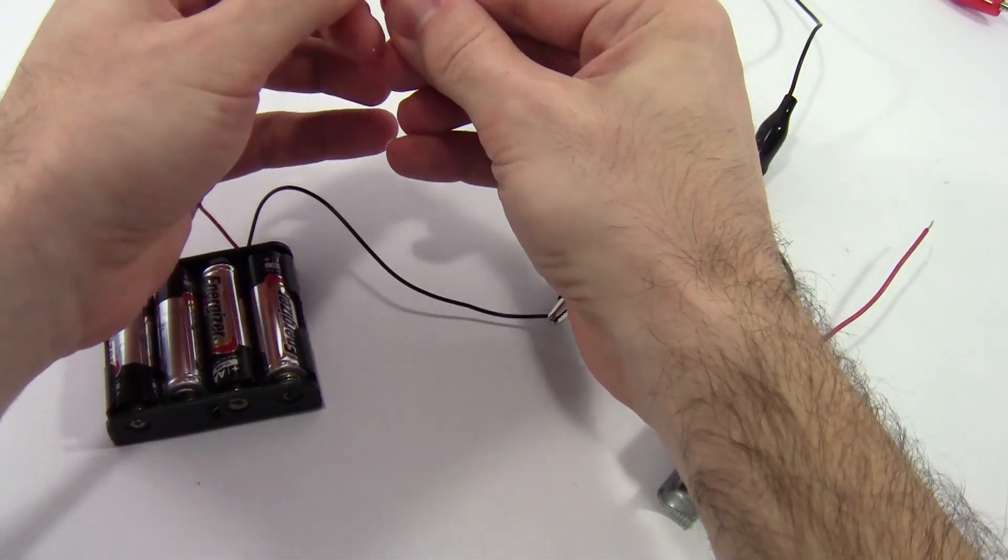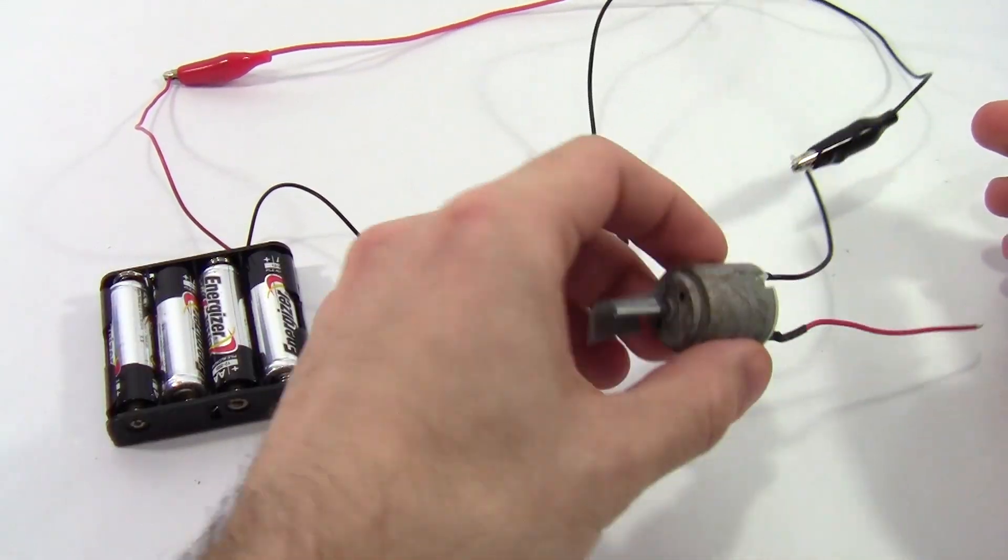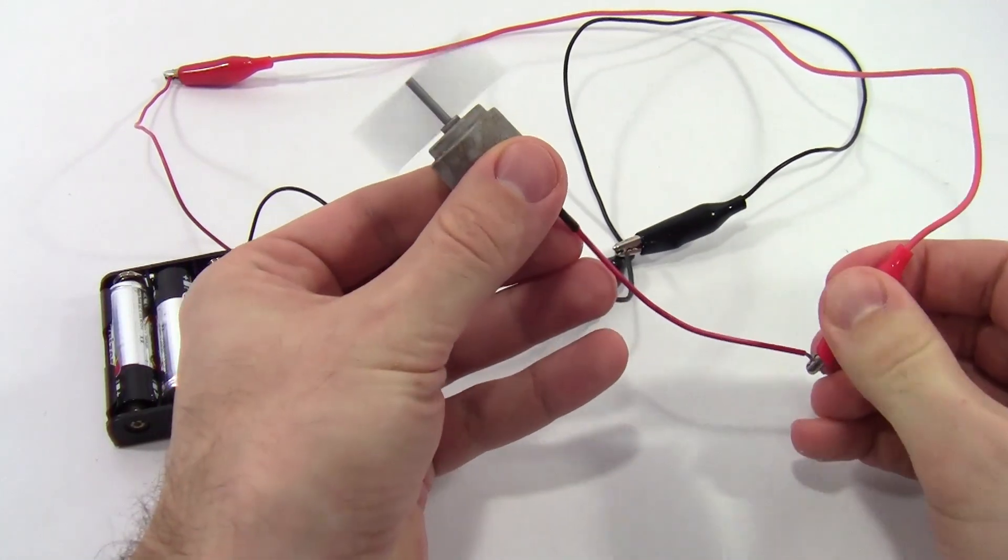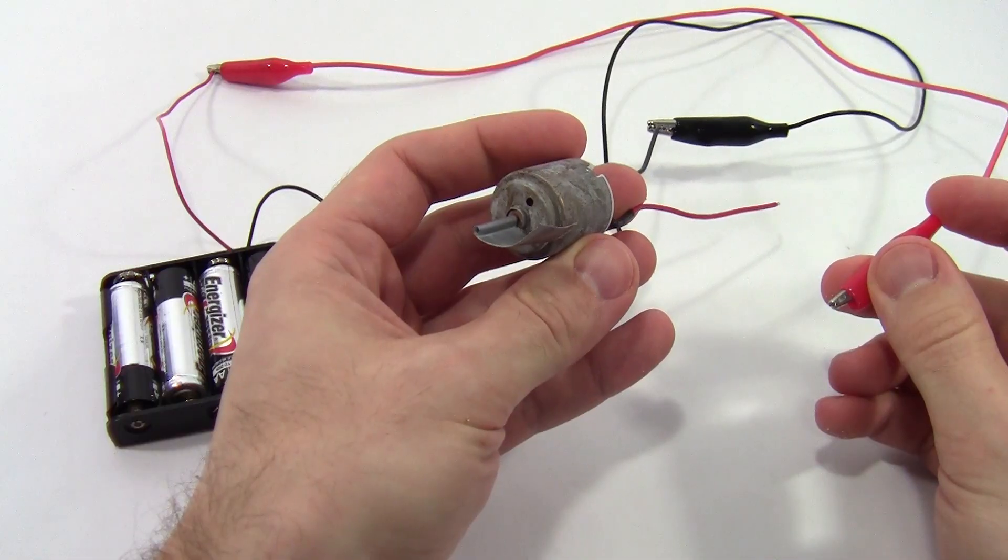And I can also connect the two red wires. And the moment I connect this red wire, the motor's going to start spinning. And it's going to be kind of loud and obnoxious, so I'm not going to let it spin for very long. I'm just going to show you. There we go. Okay, and then the moment I disconnect the red wire, that stops spinning.